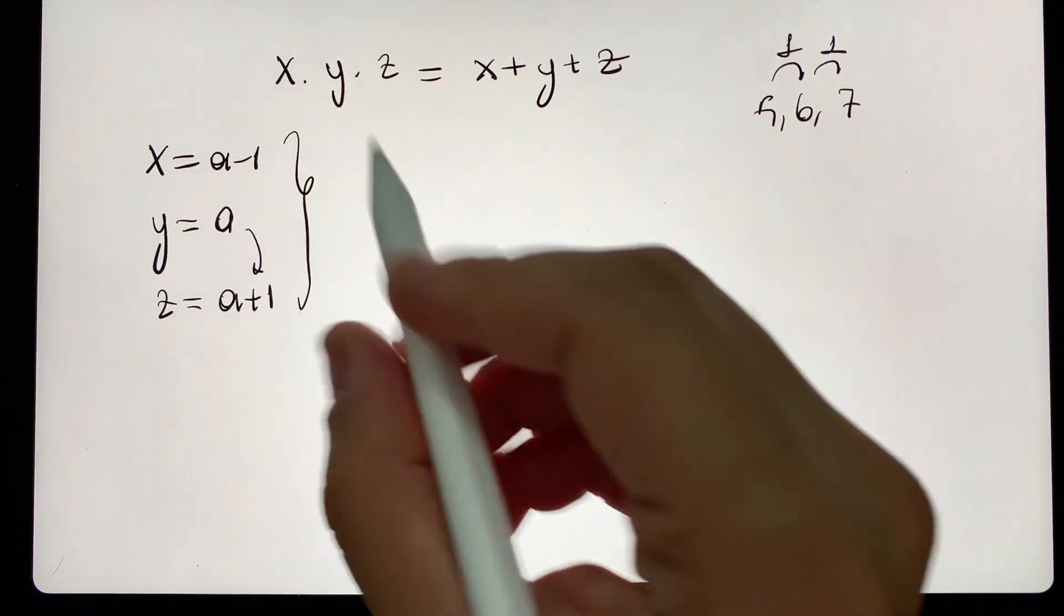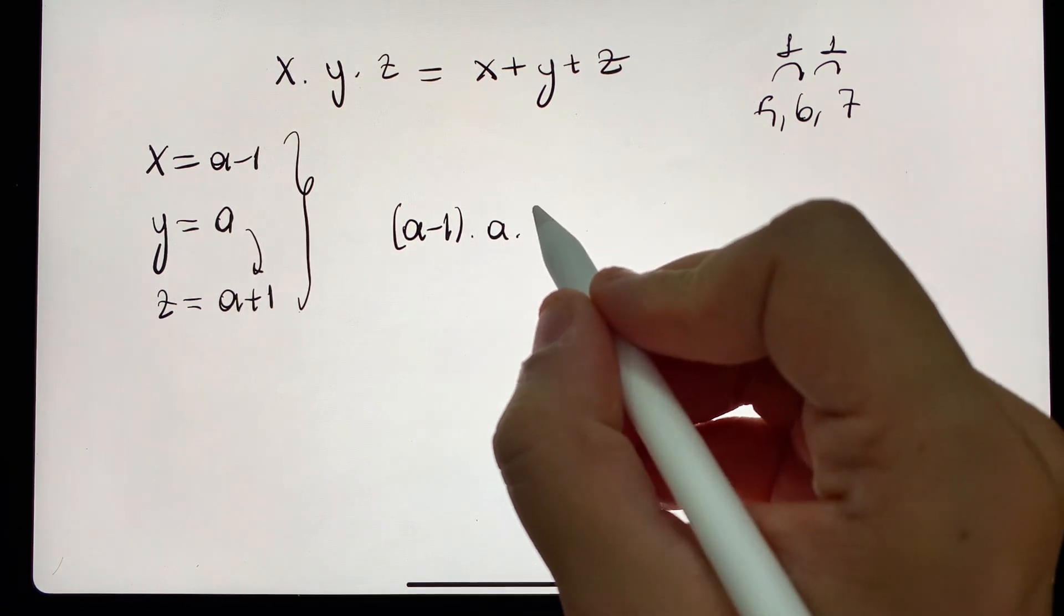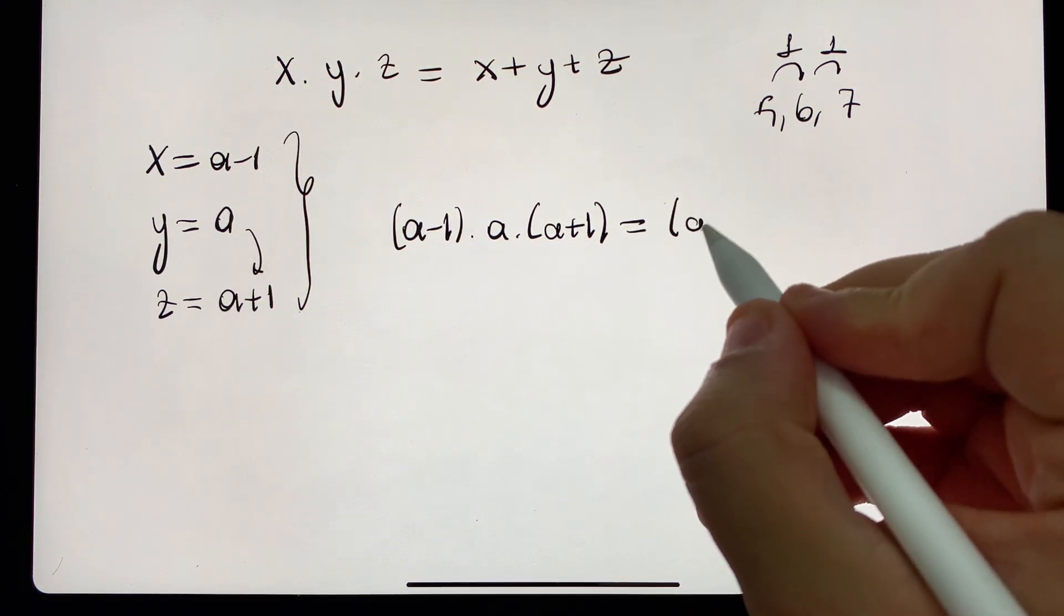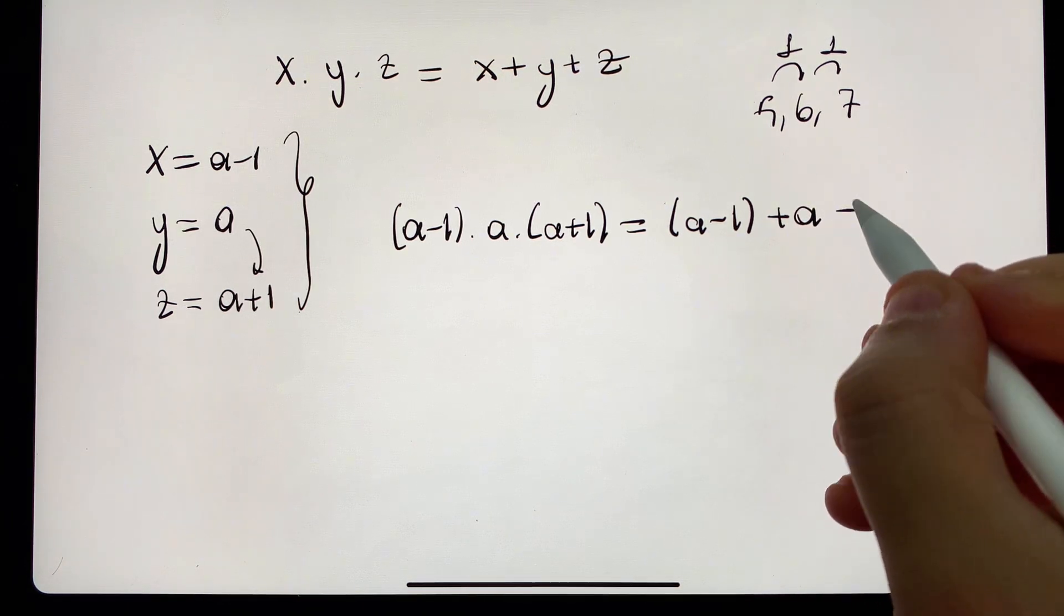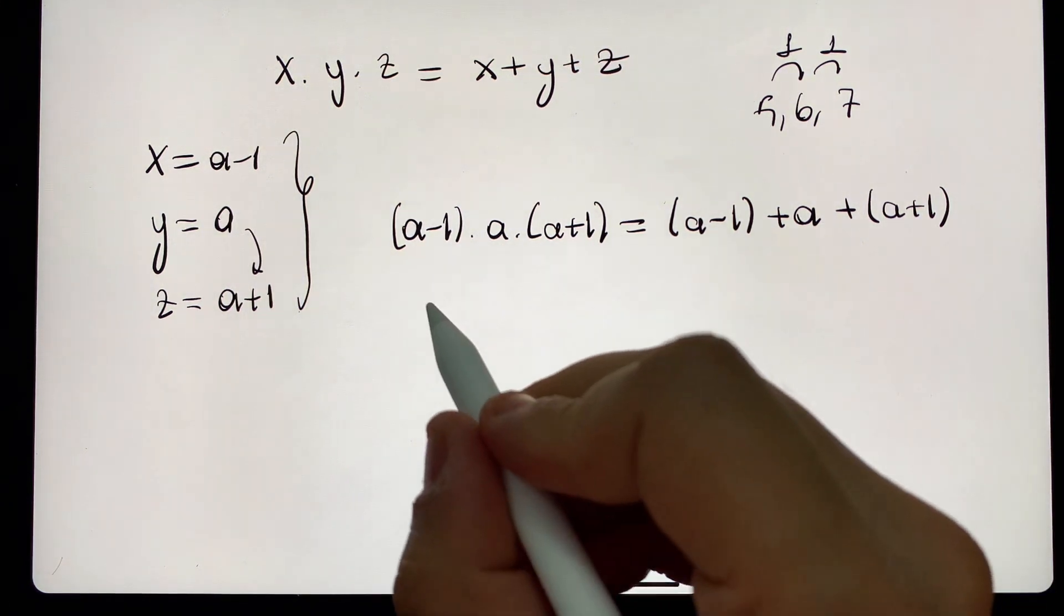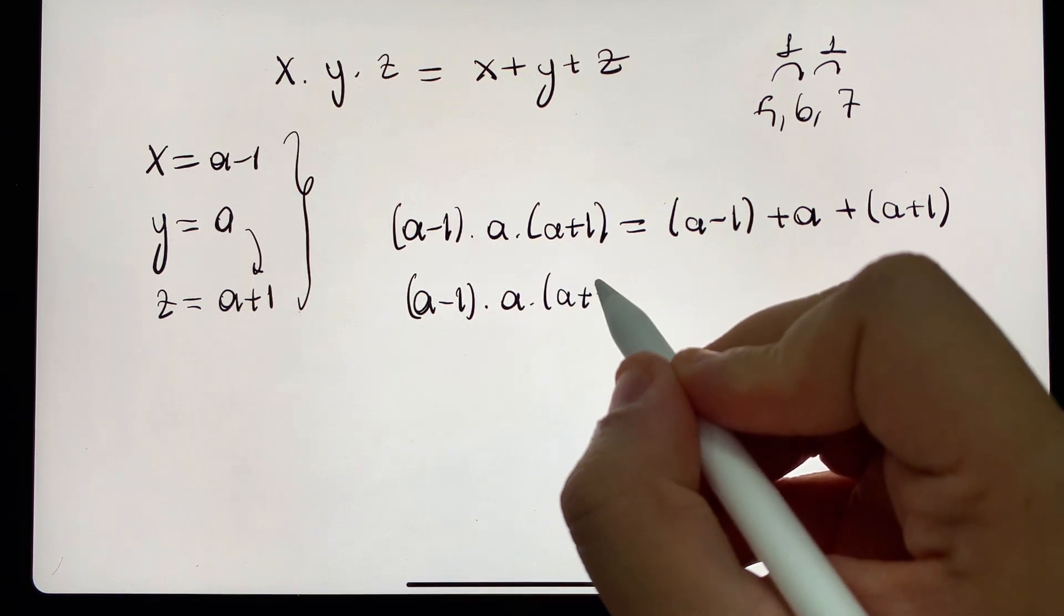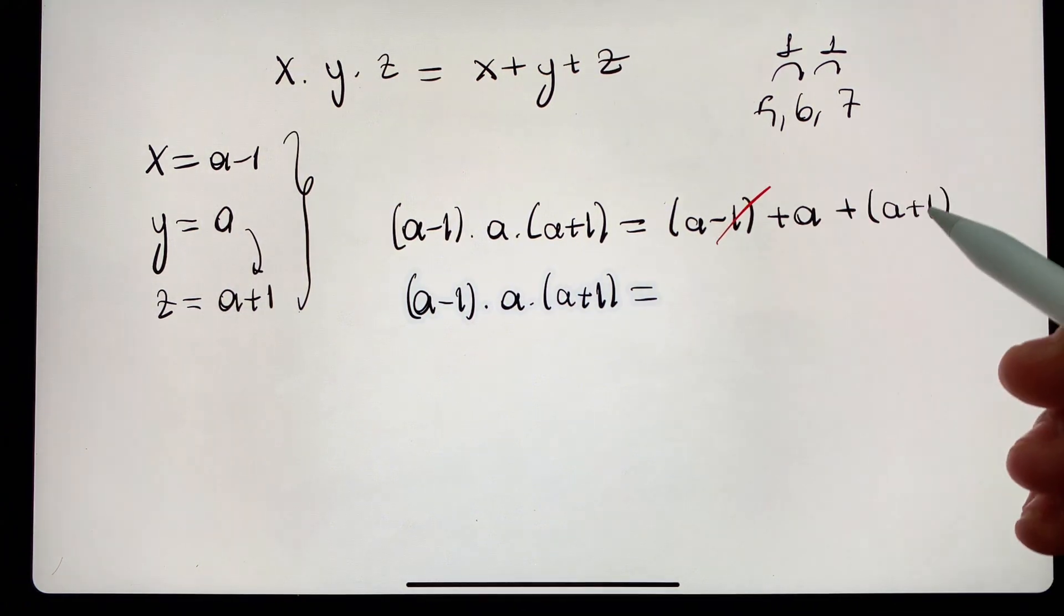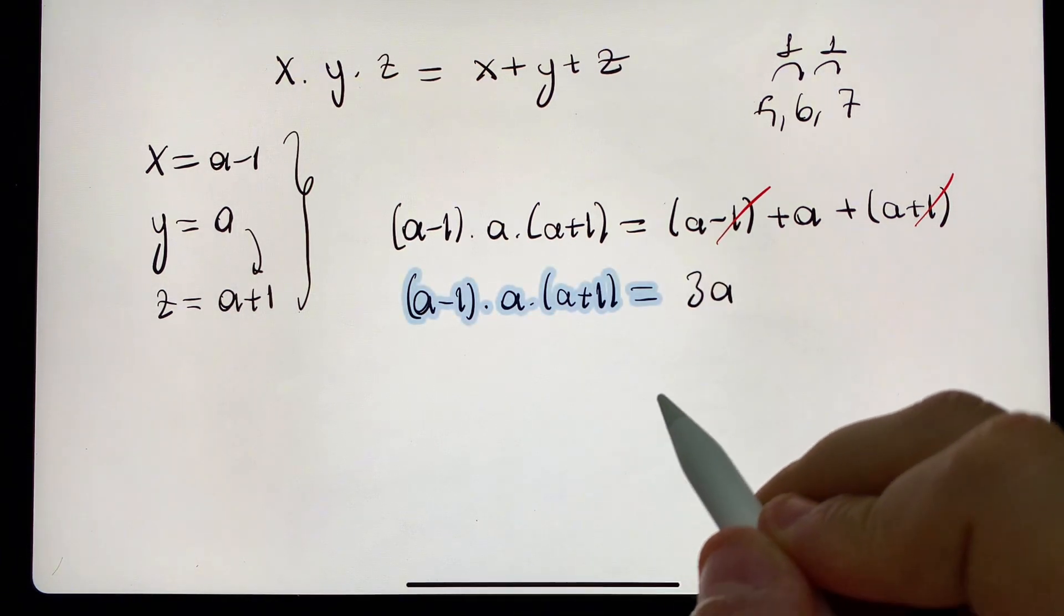Let's write their places. What will happen? X where we see a-1 times a times a plus 1 is equal in brackets to a-1 plus a plus a plus 1. Let's continue a little more. A minus 1 times a times a plus 1 in brackets. Look, if we solve the process here, plus 1 and minus 1 will cancel each other out. If you pay attention, these will go away. Only what will be left? 3 will stay.